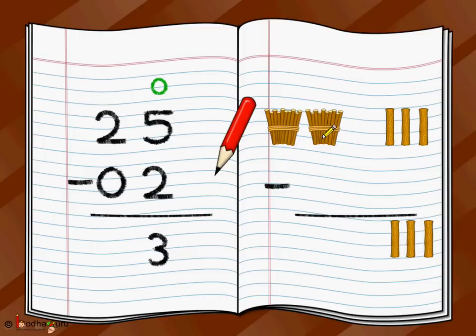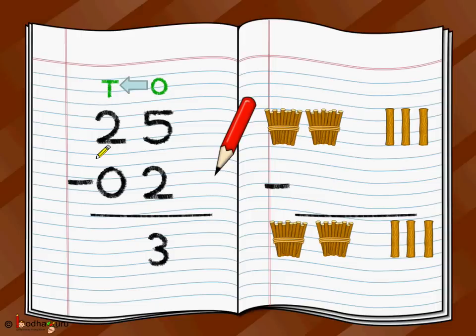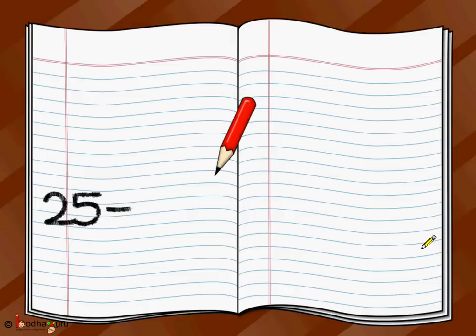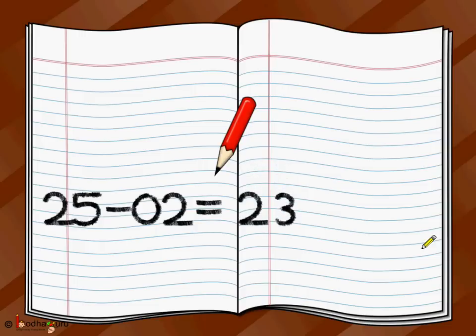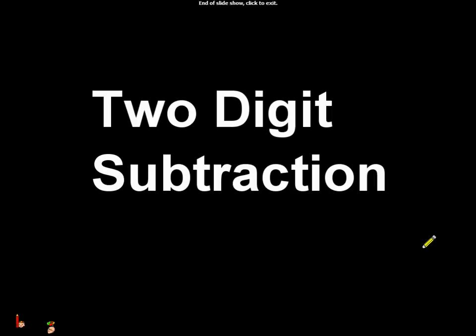Then you move to the tens place or bundles. You have two bundles of which you want to remove no bundles, or zero bundles. So you have two bundles and you do not take away anything — you are left with still two bundles. Two minus zero at the tens position — you finally have two. So twenty-five minus two is equal to twenty-three. You are left with twenty-three sticks. This is all for today, children. Have fun with maths. Take care and bye-bye.